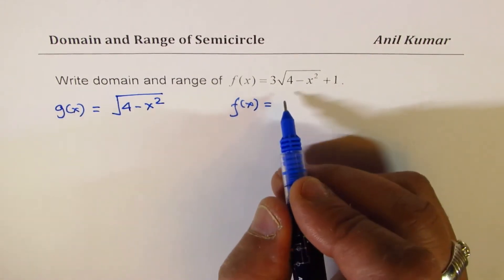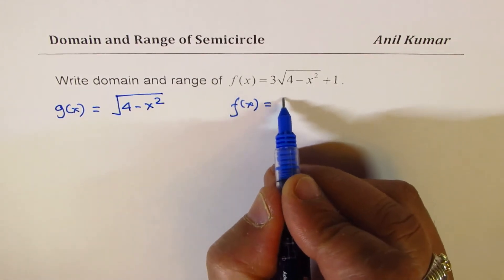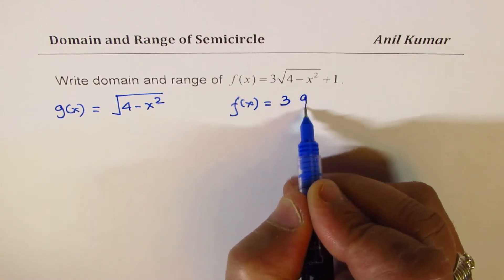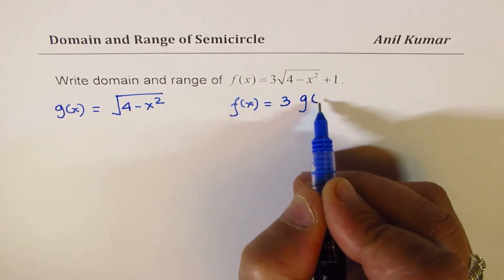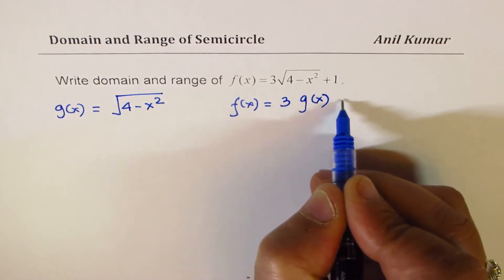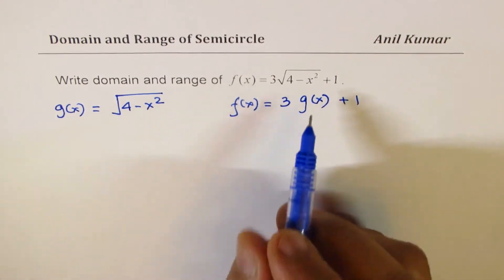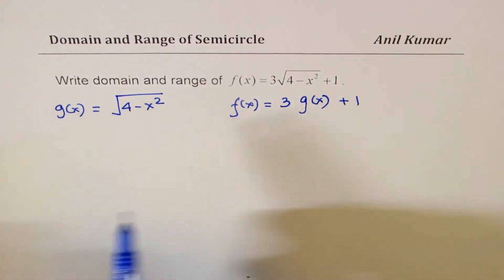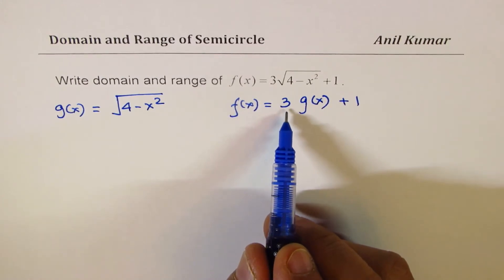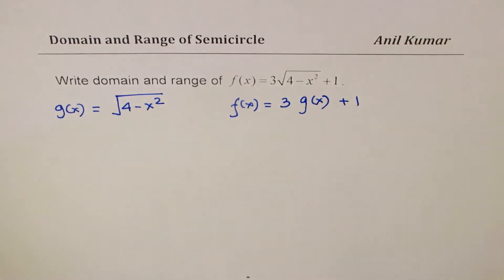So I'm writing f(x) is basically equal to 3 times g(x) plus 1. So basically I'm saying this function has been vertically stretched by a factor of 3 and moved one unit up. So I'll do it in two parts. First, I will show you what g(x) is and then get to f(x).